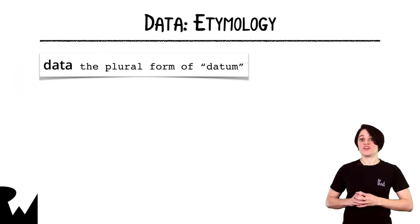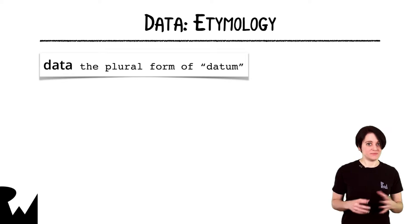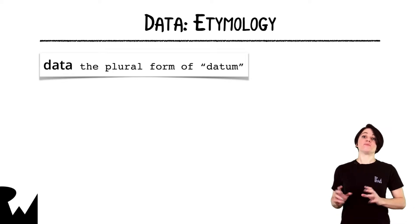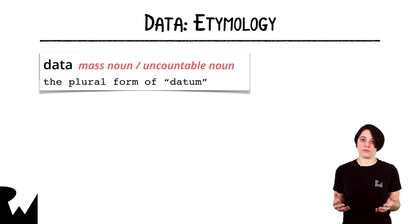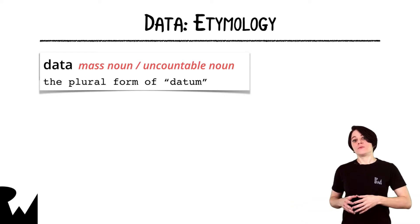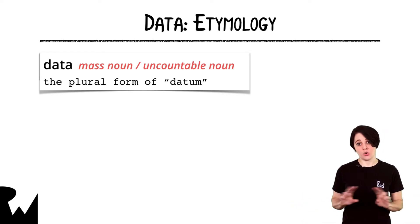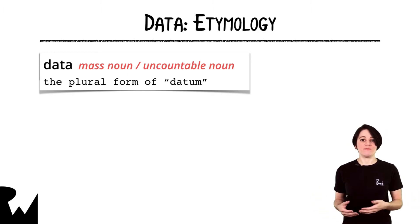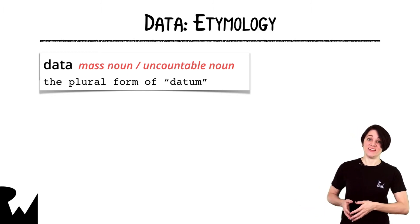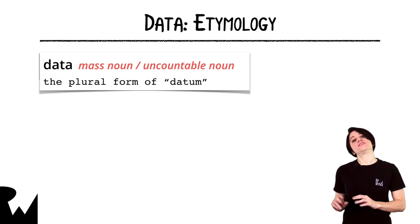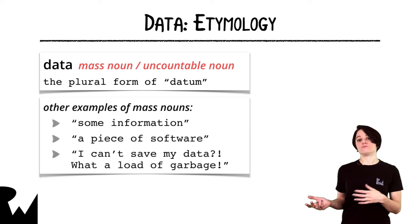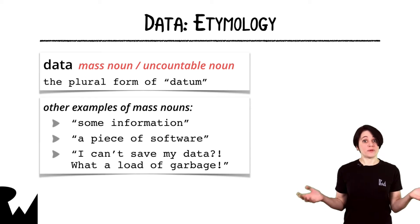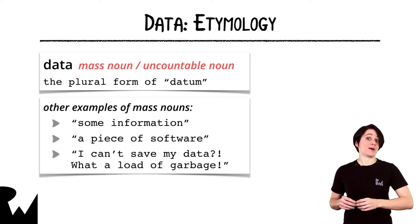The word 'data,' which can also correctly be pronounced 'data,' is the plural form of the seldom-used word 'datum.' But data, in common use, is what's known as a mass noun or uncountable noun. The main quality of a word like this is that you can't directly quantify it with a number — you won't hear a phrase like 'I've got over 9,000 data.' Instead, you can have some data or a piece of data, which has the same meaning as datum. Some other related words that fit this pattern are information, software, and garbage — which is what users will think of your app if you don't do a good job of saving their data.